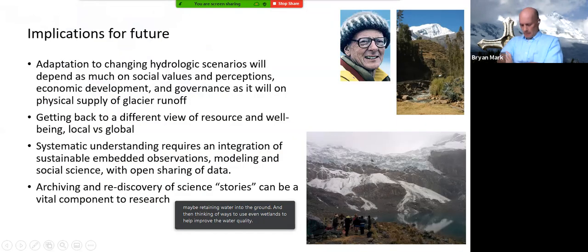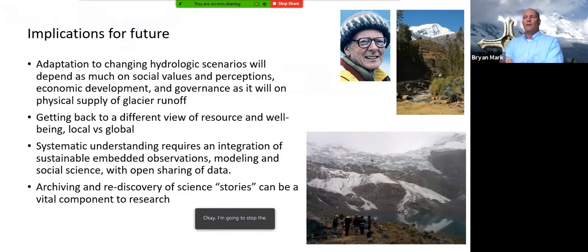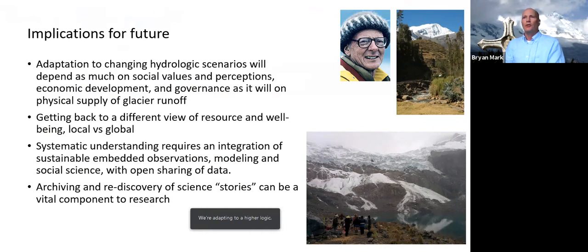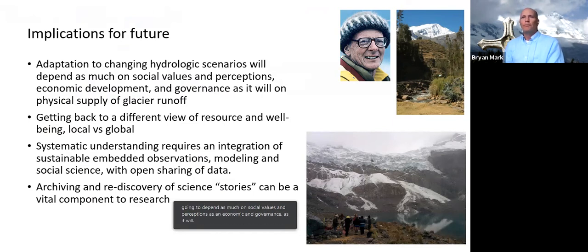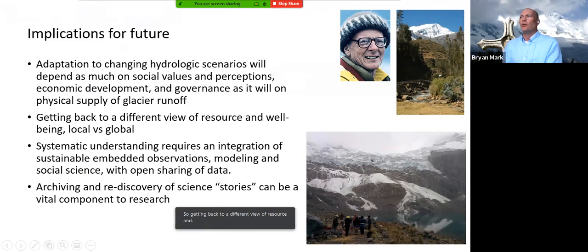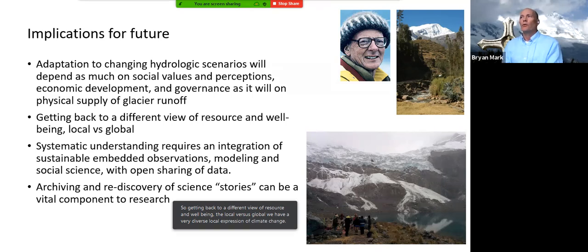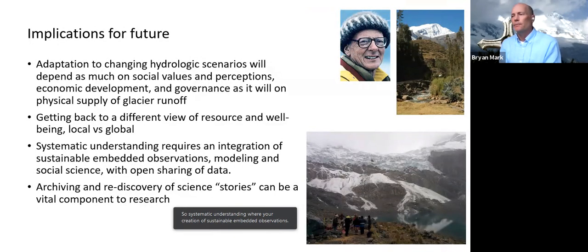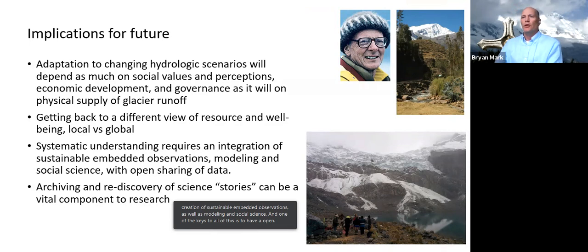In summary, adapting to hydrologic change will depend as much on social values, perceptions, economics, and governance as on the physical supply of water from glaciers. There's a very diverse local expression of climate change as opposed to a universally forced warming. What's needed is a systematic understanding, creation of sustainable embedded observations, modeling, social science, and — critically — an open source of sharing data, something we've been trying to perpetuate. Archiving and rediscovering science stories can be a vital component for research.